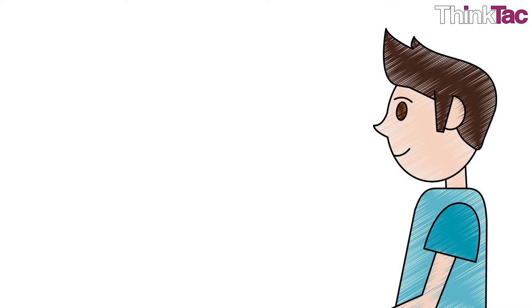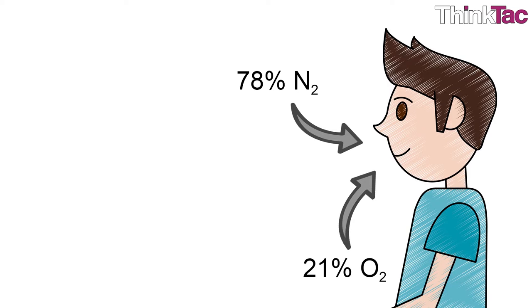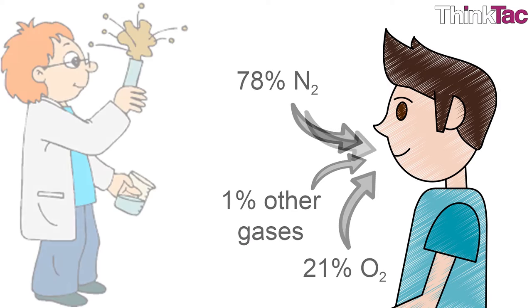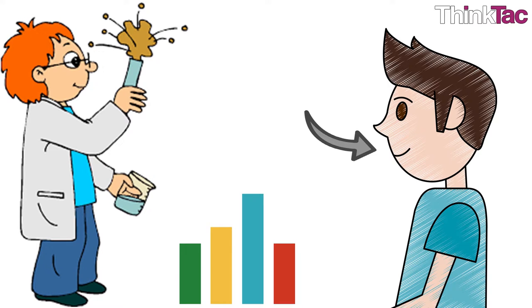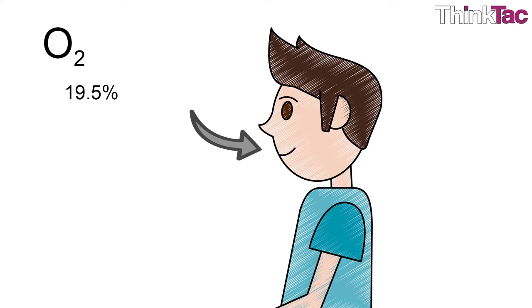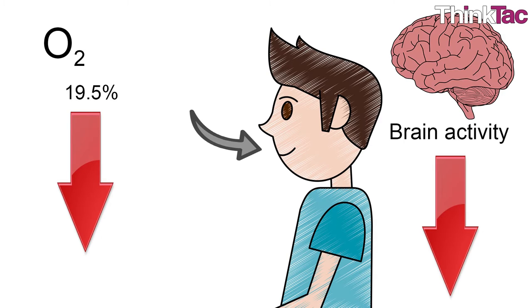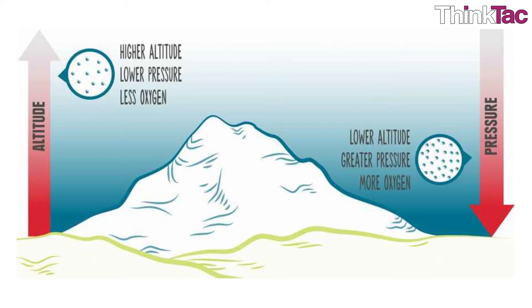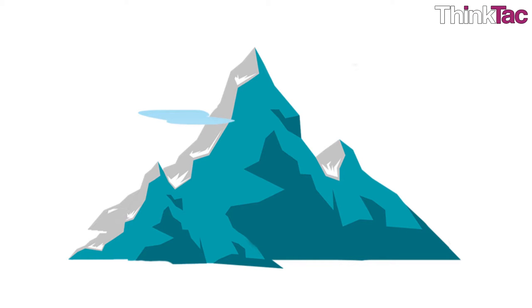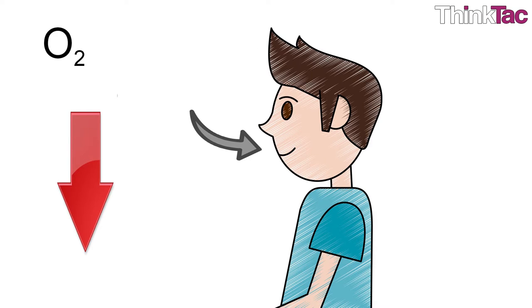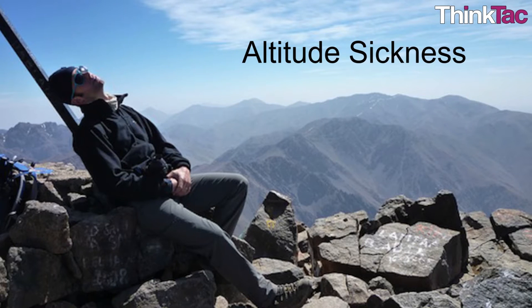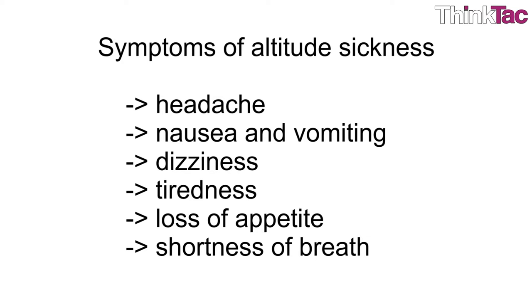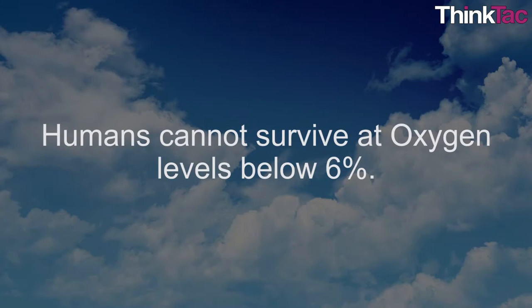Humans breathe in approximately 78% nitrogen, 21% oxygen, and a very minute amount of other gases. Scientists have calculated that humans require an oxygen concentration between 19.5% and 23.5%. If oxygen concentration drops below 19.5%, the brain starts functioning slower and various body functions get compromised. The effective concentration of atmospheric oxygen is much lower at higher altitudes — for example, at hill stations — and this decrease causes altitude sickness, characterized by nausea and vomiting.